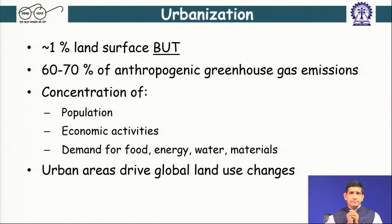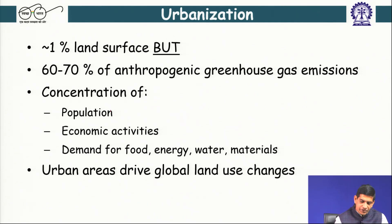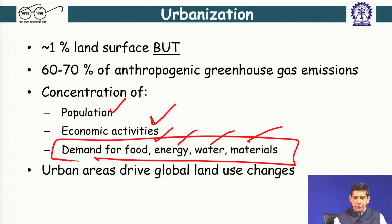What is the problem with urbanization? Urban areas occupy just 1 percent of the land surface but release 60 to 70 percent of anthropogenic greenhouse gas emissions. That is the environmental issue we are talking about in this course. It is the concentration of population, concentration of economic activities, and demand for food, energy, water, and materials — each one of which has environmental implications. Urban areas are also driving global land use changes.